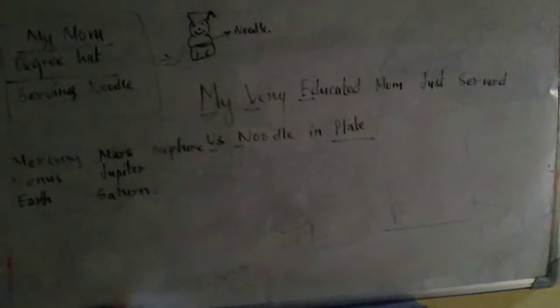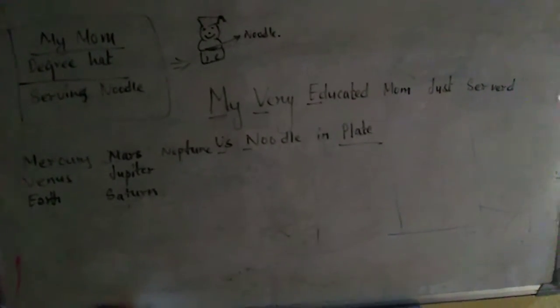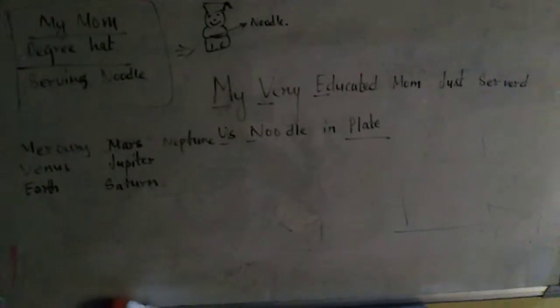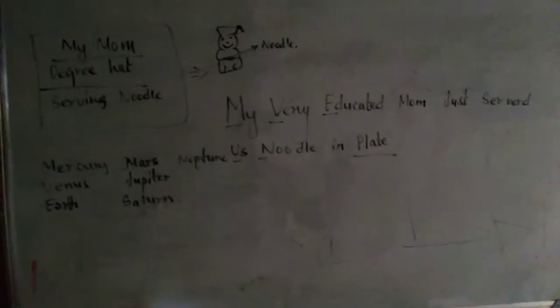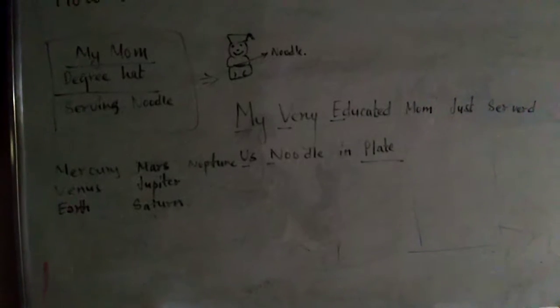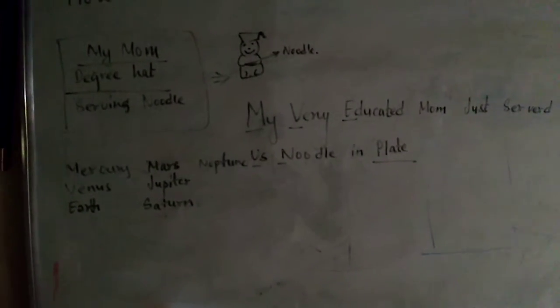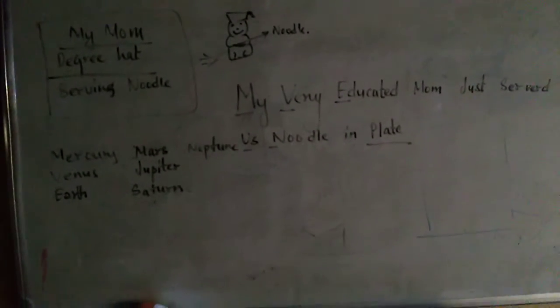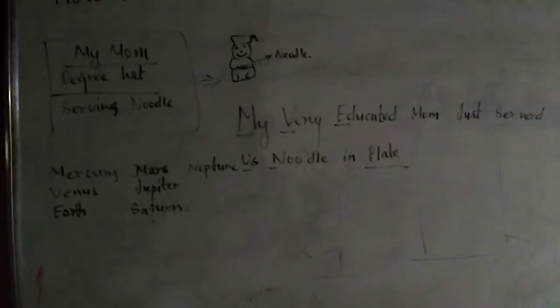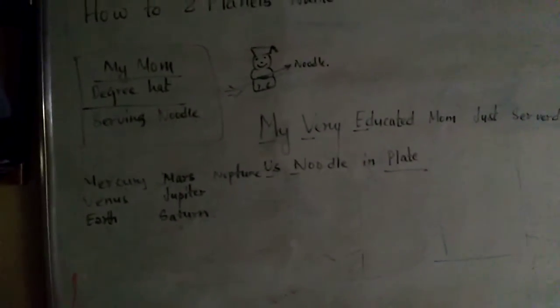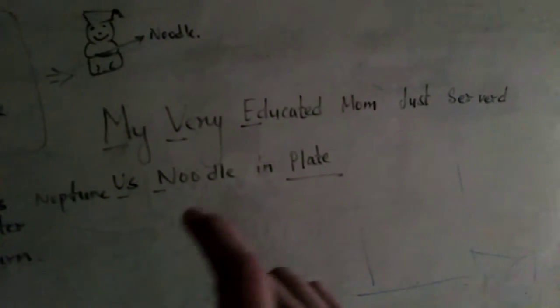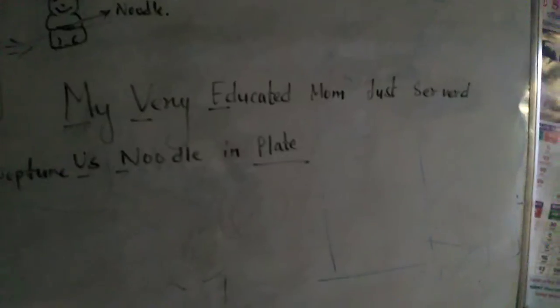So the sentence is: 'My Very Educated Mom Just Solved Us Noodles.' If you want to add Pluto, you can add 'a plate' or just ignore it. If you remember this sentence after visualizing your mom solving noodles, you can remember the planet names very easily — M for Mercury, V for Venus, E for Earth, and so on. It's very easy, you can try it!